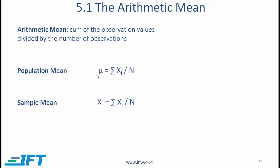The arithmetic mean for a population is generally denoted by the Greek symbol mu. This is your summation sign. If you have n observations, i goes from 1 to n, and you sum up all the observations and then divide by the number of observations.